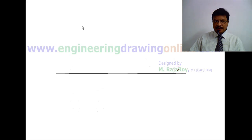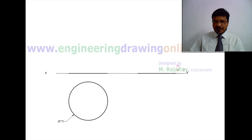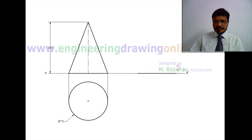In this problem, the cone is resting on its base on the horizontal plane. Start by drawing the XY line, then draw the top view of the cone as a circle, and project the front view of the cone. Take the axis length as 100 mm and the base circle diameter as 75 mm, and project the front view. After that, take a profile plane and draw the side view of the cone.